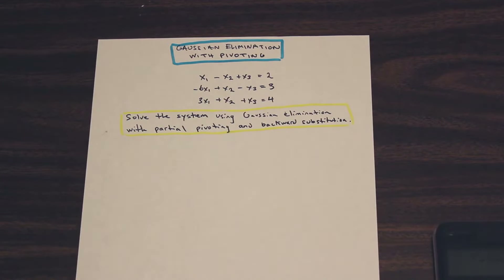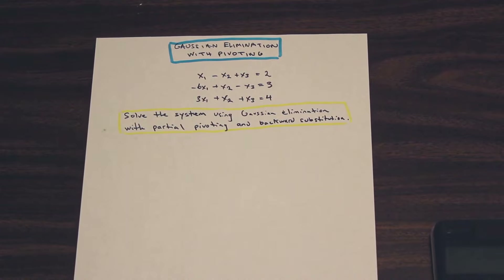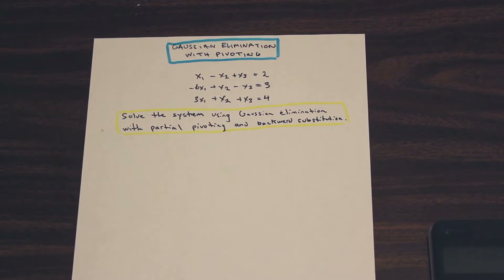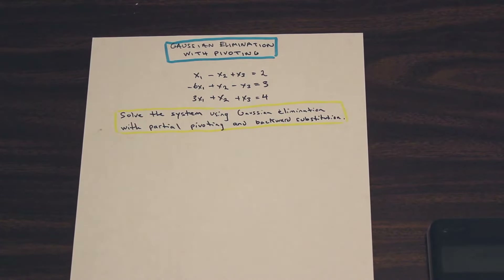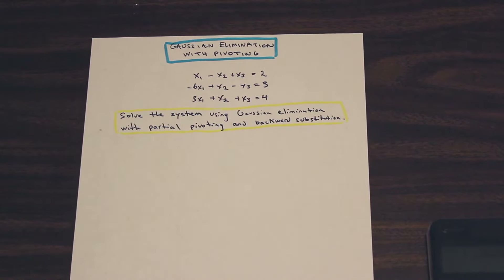Fred here at Math and Engineering. We're going to solve a quick problem today on solving a system of linear equations using Gaussian elimination with pivoting — specifically partial pivoting. Partial pivoting is a method a computer uses to solve a system of linear equations using less resources. So that's what we're going to be doing today. I'm just going to write down the solutions and explain along the way what we're doing. Let's get started.